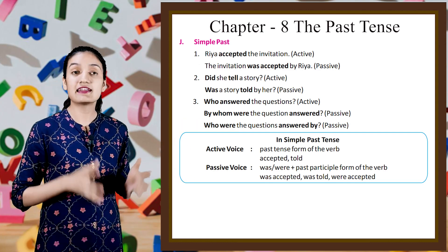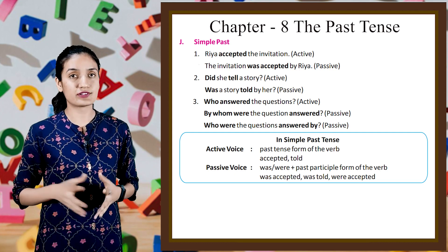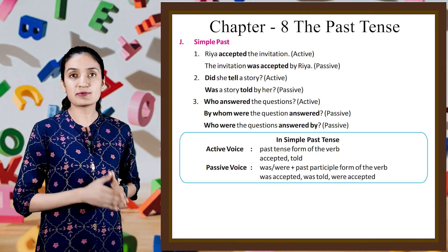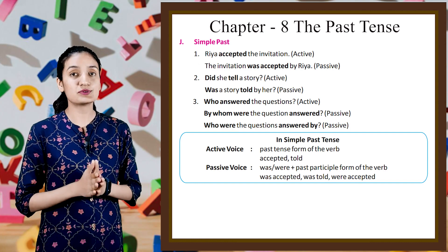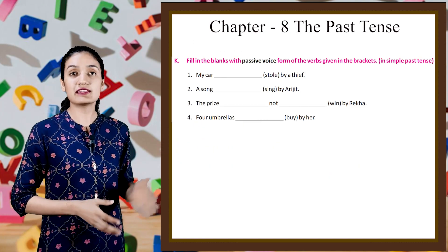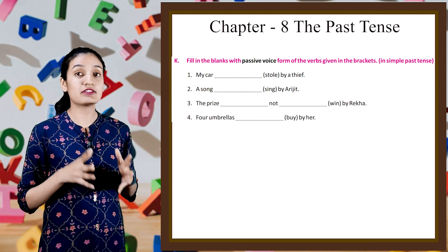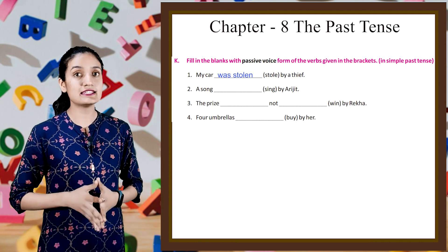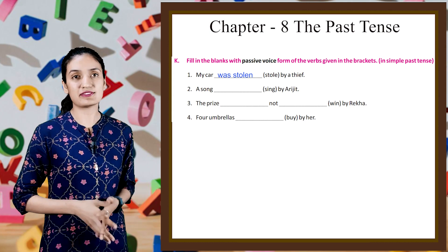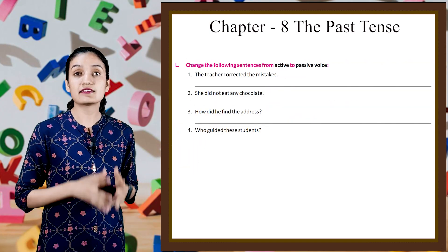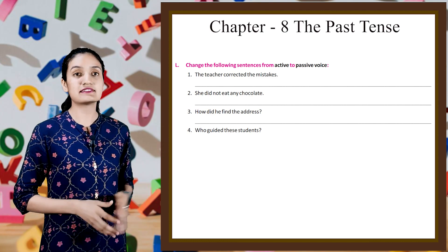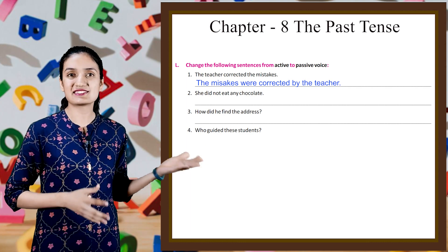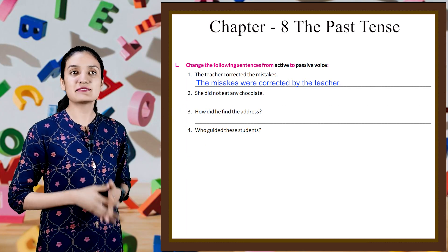In simple past tense, active voice uses the past tense form of the verb — accepted, told. Passive voice uses was/were plus past participle form of the verb — was accepted, was told, were accepted. Now, fill in the blanks with the passive voice form of the verbs in brackets in simple past tense. First example: 'My car was stolen by a thief.' Do the rest by yourself. Also, change the following sentences: 'The teacher corrected the mistakes' becomes 'The mistakes were corrected by the teacher.' Do the rest sentences by yourself.